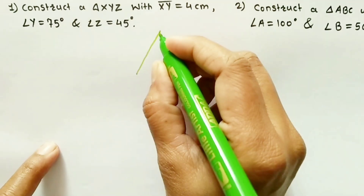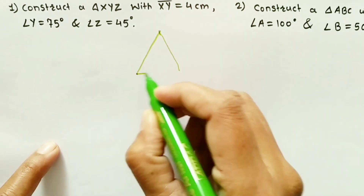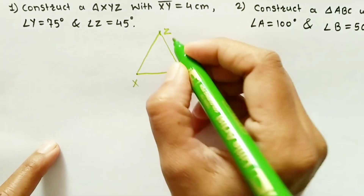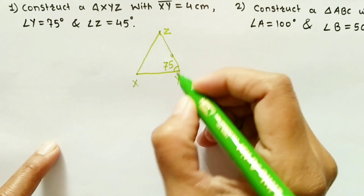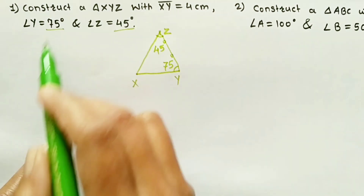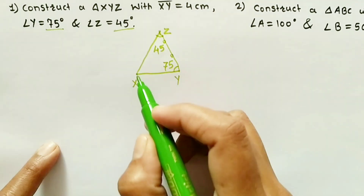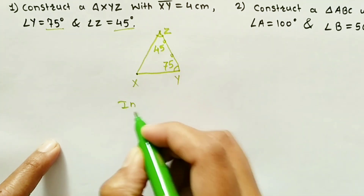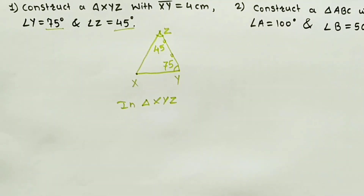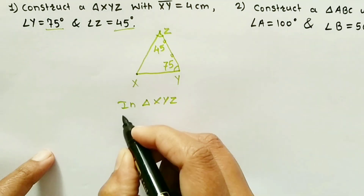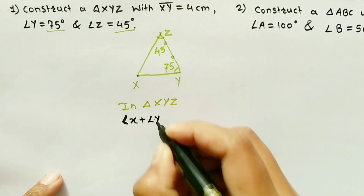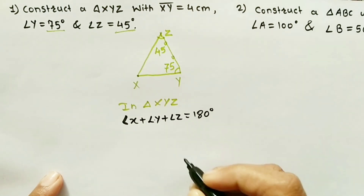The first question is: construct triangle XYZ with XY equal to 4 cm, angle Y equal to 75 degrees, and angle Z equal to 45 degrees. In triangle XYZ, we use the angle sum property, so angle X plus angle Y plus angle Z is equal to 180 degrees.